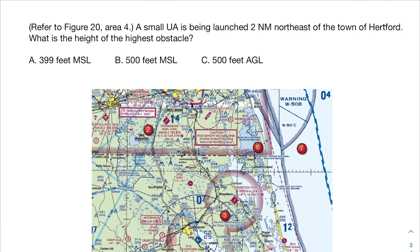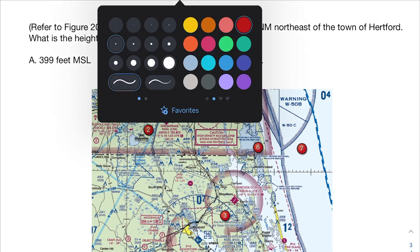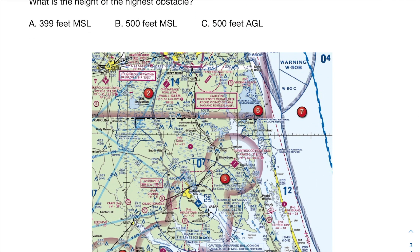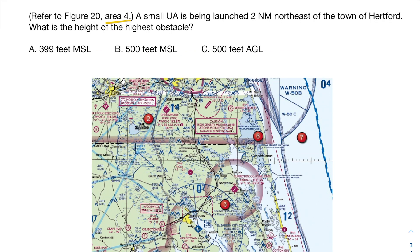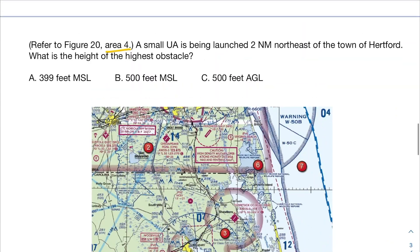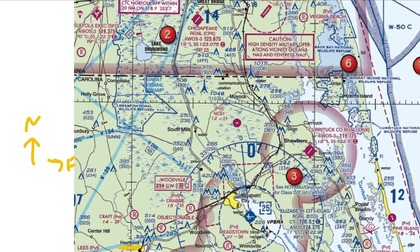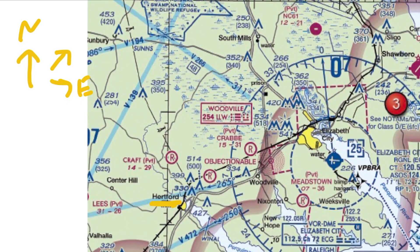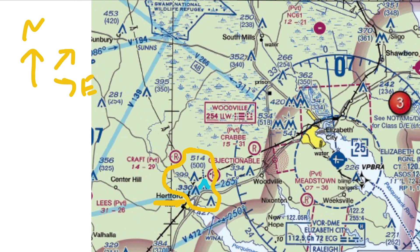Next question: a small UA is being launched two nautical miles northeast of the town of Hertford — what is the height of the highest obstacle? This is similar to our first problem but different: we're not asked what altitude the unmanned aircraft can reach, but the height of the obstacle itself. Looking at area four and zooming in, we find the town of Hertford. Two nautical miles northeast — northeast is this direction. On your actual test, take out your ruler and measure it. Two nautical miles northeast refers to these obstacles here. The tallest one has heights of 514 and 500.